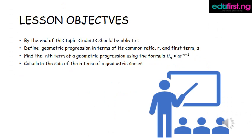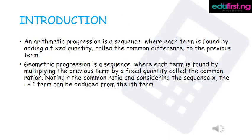Lesson objectives: at the end of this topic, students should be able to define geometric progression in terms of its common ratio r and first term a, find the nth term of geometric progression using the formula, and calculate the sum of the n terms of a geometric series.